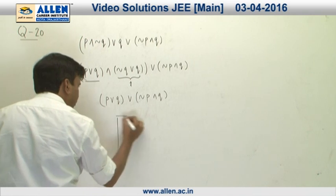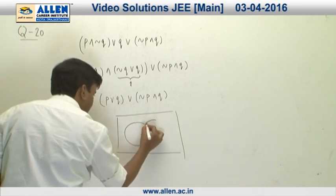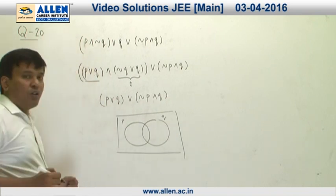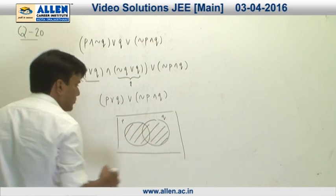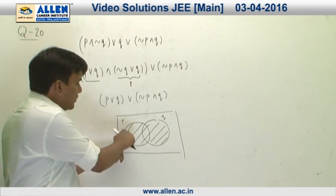If we want to see this through a Venn diagram, suppose there are two sets p and q. If we are talking about p or q, this is going to be this entire set.